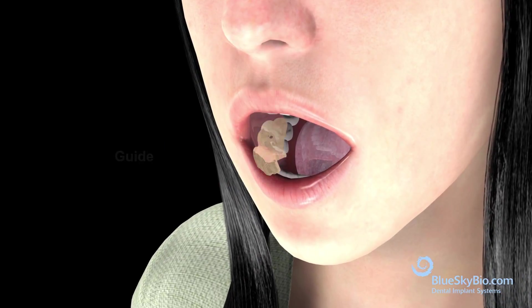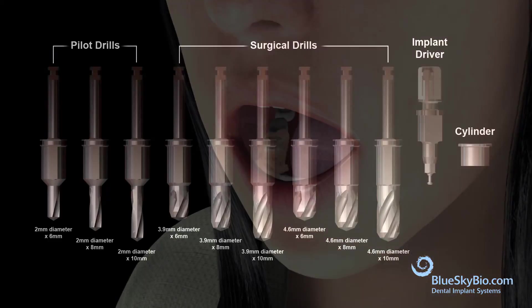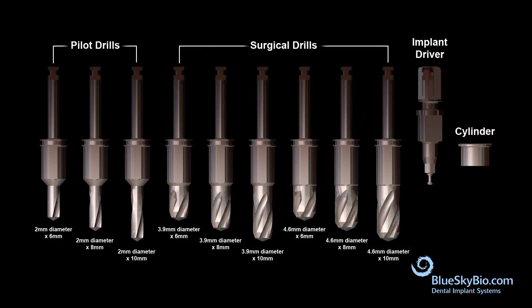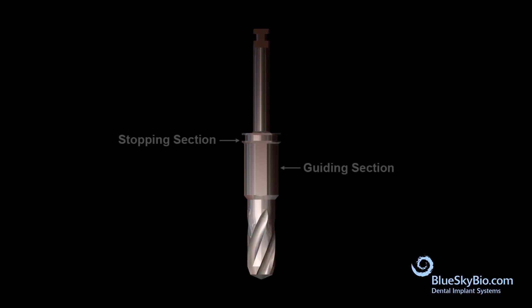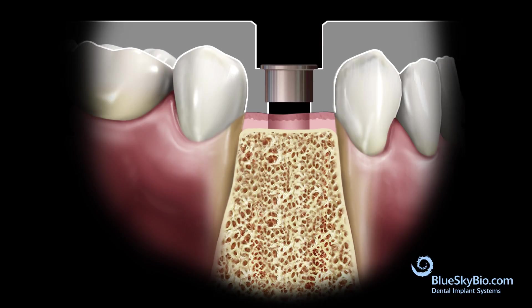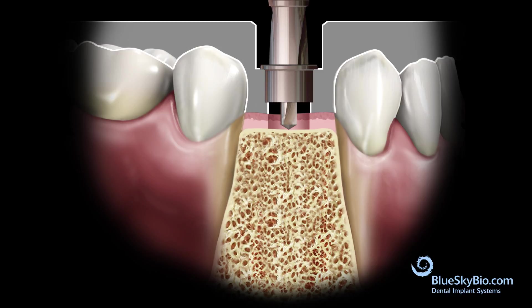Print the surgical guide and insert the metal cylinder. The fit of the guide should be verified before the surgical procedure. A flap is raised and the guide is positioned in the mouth.